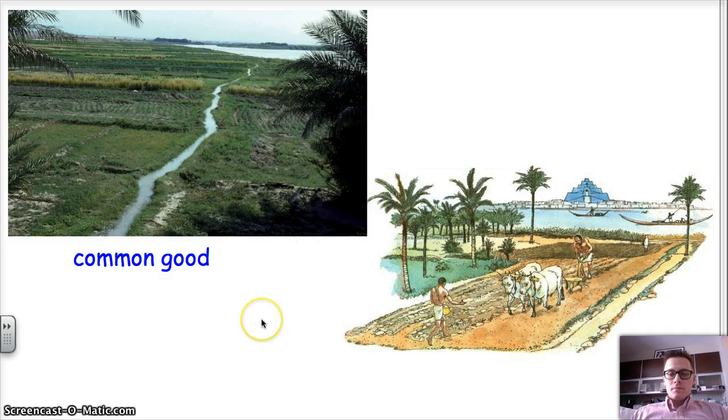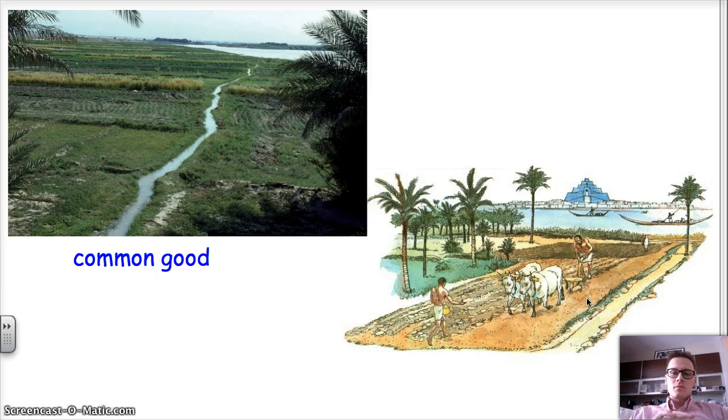So what we have here is the irrigation system which required many people to work together. It required a government because there would be arguments. There would be great difficulty putting it together and maintaining it. And we have the plow. The plow helped to stir the soil, turn the soil so that the nutrients would be available for the seeds.